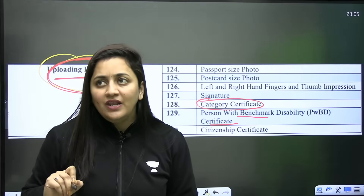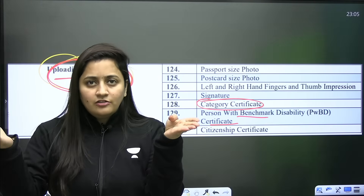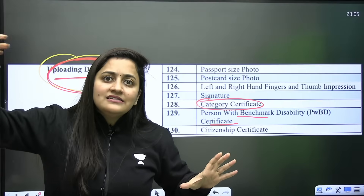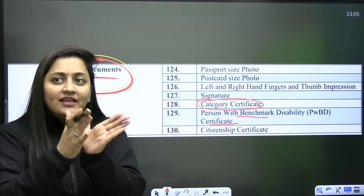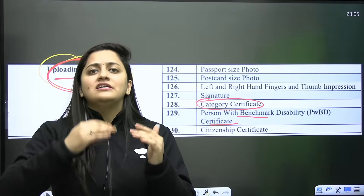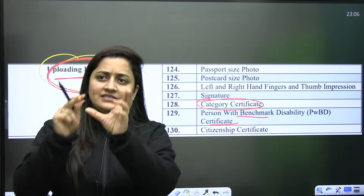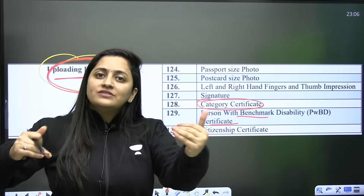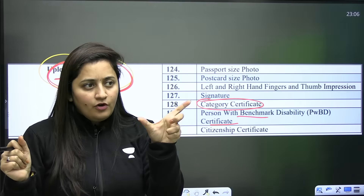Regarding the category certificate — your application form is from 9th Feb to 9th March. If your caste certificate is valid during that time, you can upload it. Results are expected in June, so at the time of counseling, if the certificate is expired, get a new one. My suggestion: if you can get a new certificate in 10 to 20 days, go for that. Otherwise, if it's valid till February or March, use that and apply for a new one later.